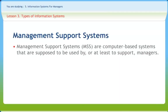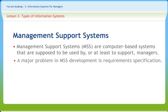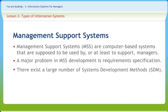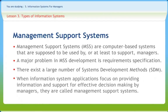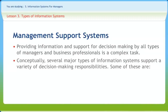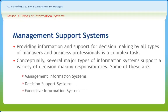Management Support Systems are computer-based systems that are supposed to be used by or at least to support managers. A major problem in MSS development is requirement specification. When information system applications focus on providing information and support for effective decision-making by managers, they are called management support systems. Several major types of information systems support a variety of decision-making responsibilities, including management information systems, decision support systems, and executive information systems.